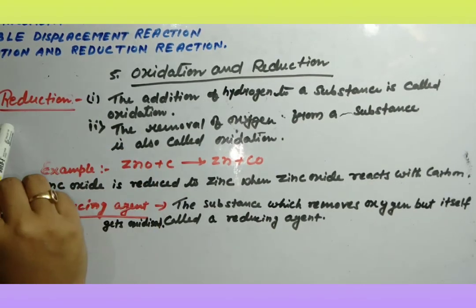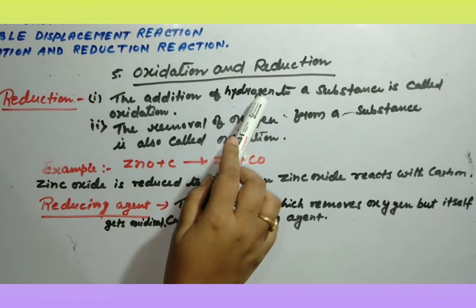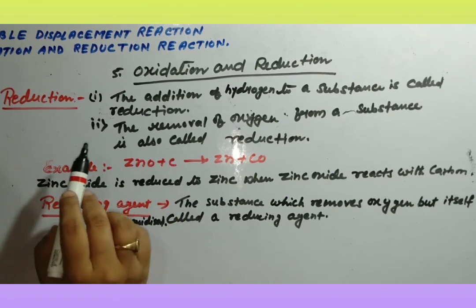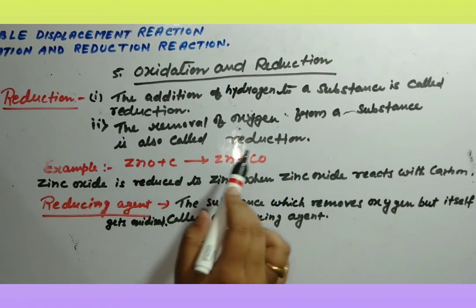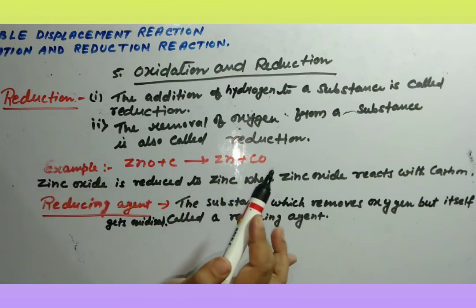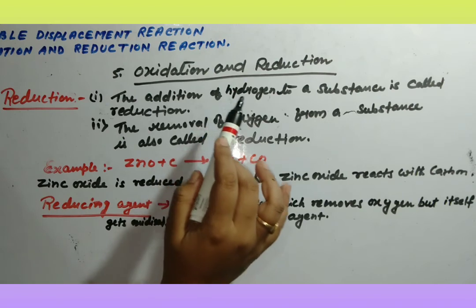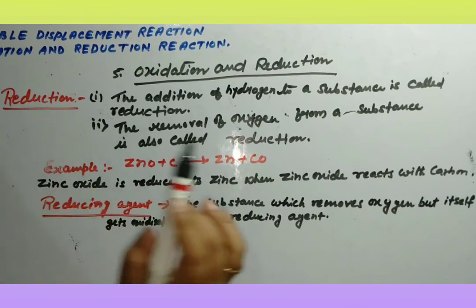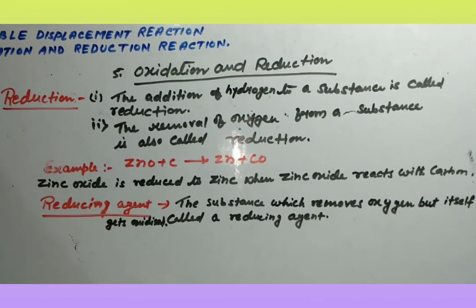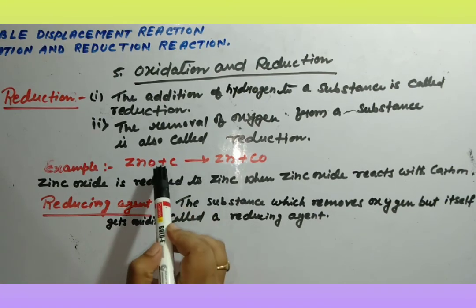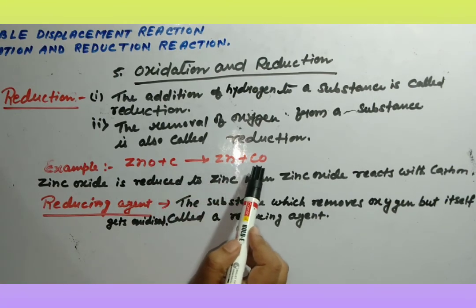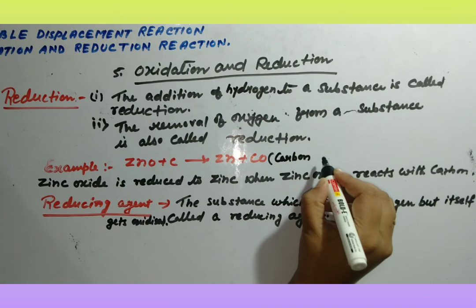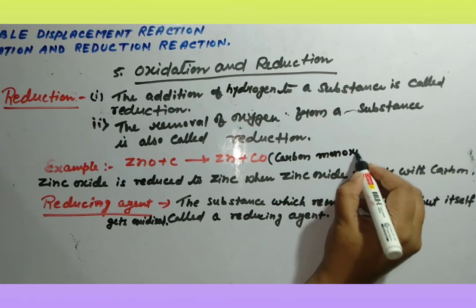Now the next: reduction. The addition of hydrogen to a substance is called reduction, and the removal of oxygen is also called reduction. Example: zinc oxide reacts with carbon → zinc + carbon monoxide (CO). Zinc oxide is reduced to zinc when zinc oxide reacts with carbon — oxygen is removed from zinc oxide, so this is reduction.